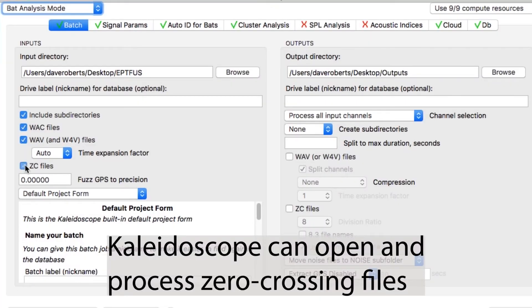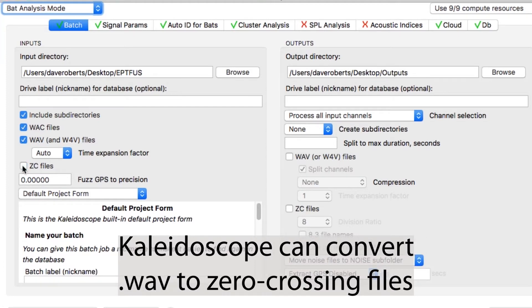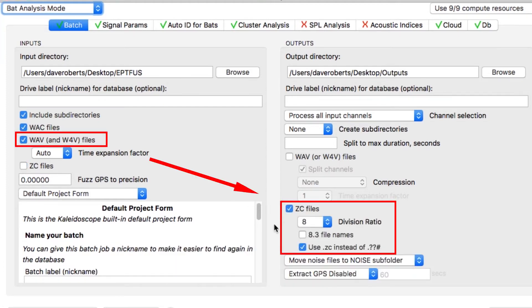Kaleidoscope can open and process zero crossing files. Kaleidoscope can convert full spectrum audio files into zero crossing files. Let's take a look at how that works.